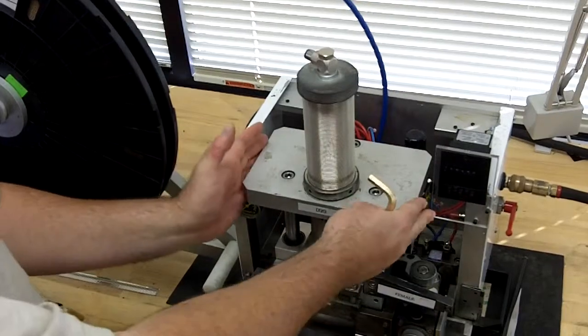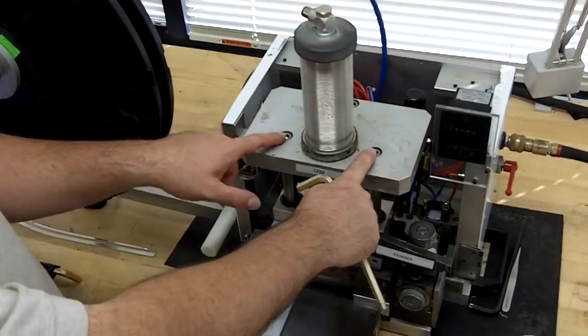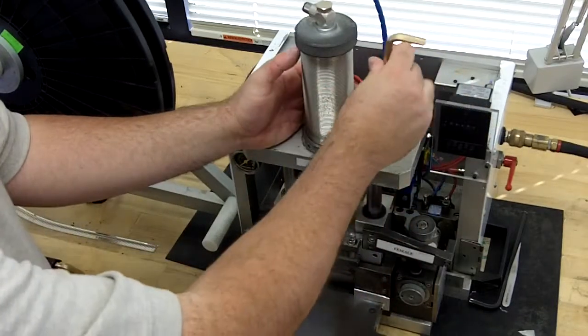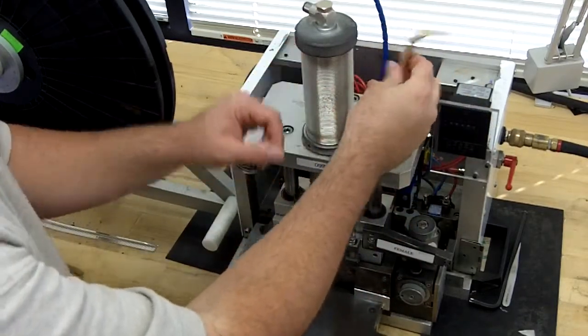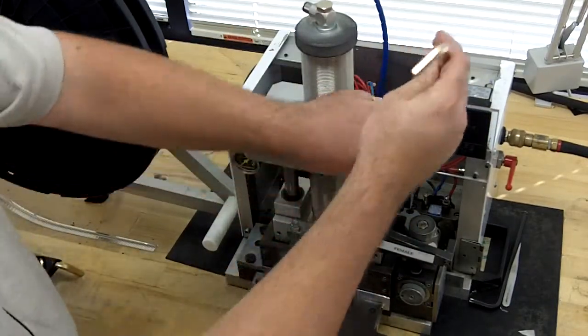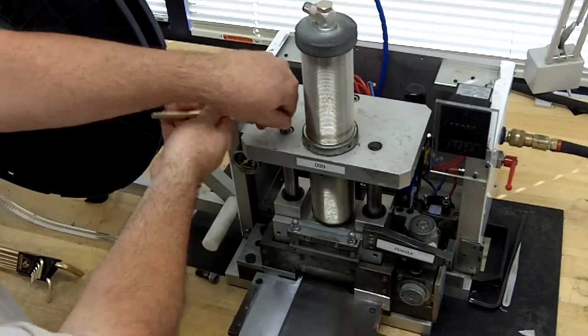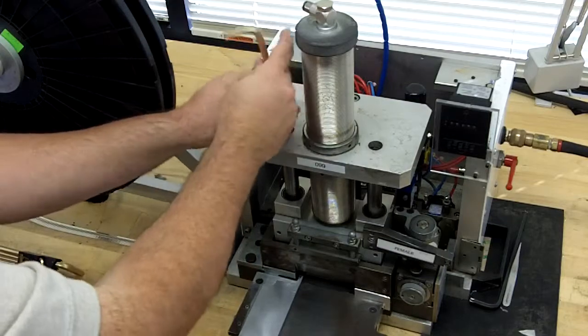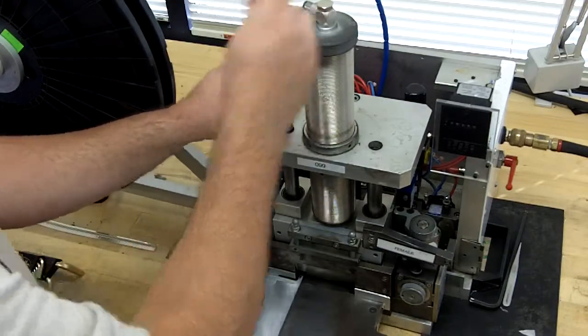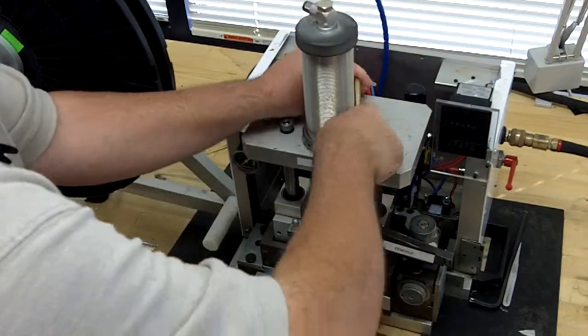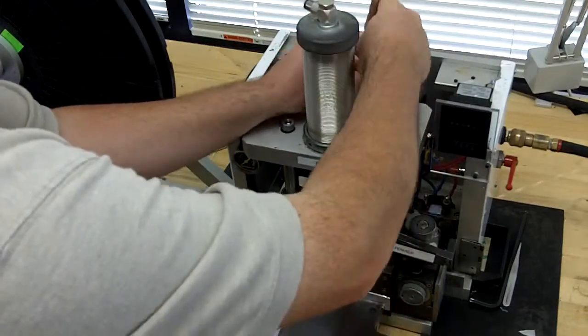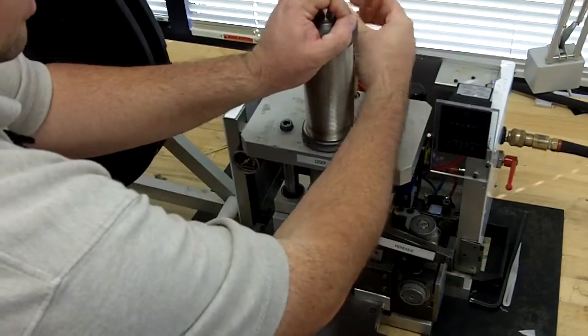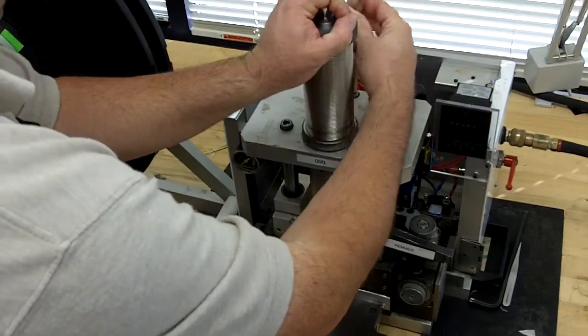The third thing we want to do is remove the air cylinder assembly by removing these three allen head bolts. This is spring-loaded underneath, so you'll have to hold it as you're removing the last bolt.